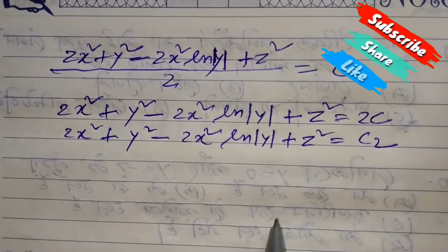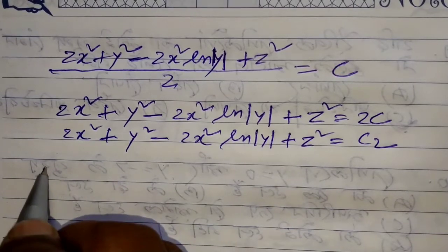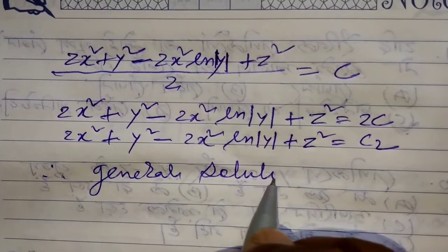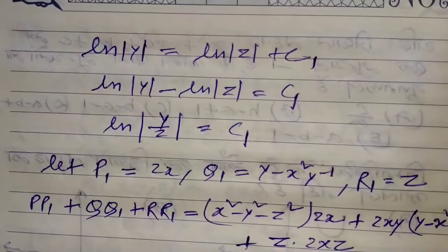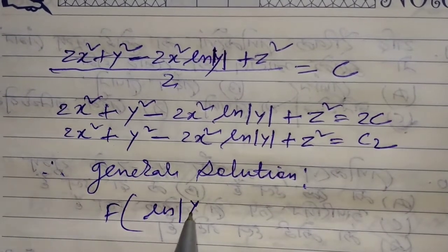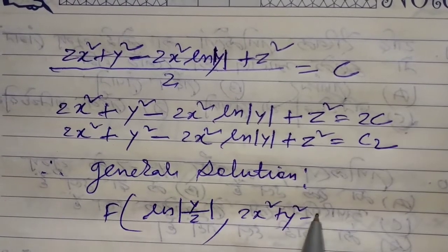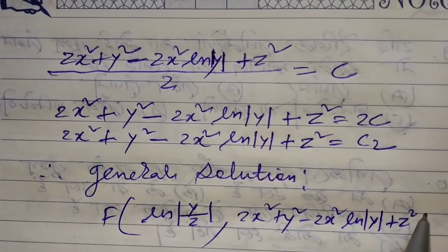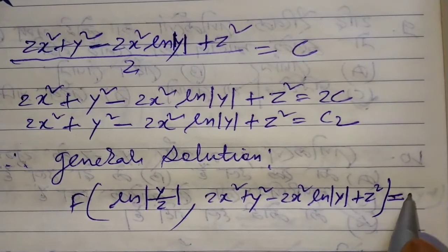This is the second solution. Therefore, the general solution is: ln(y/z) and 2x² + y² - 2x²ln|y| + z² = c.